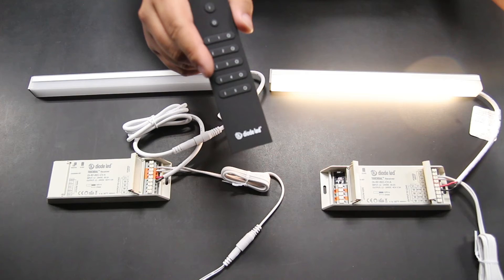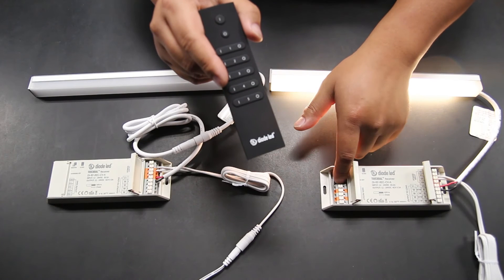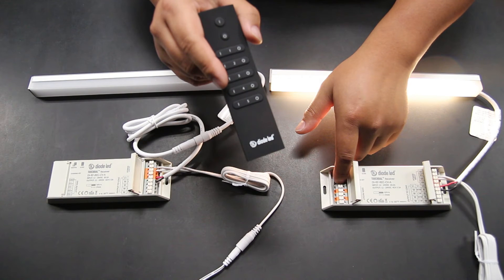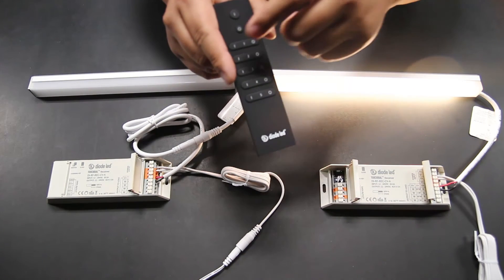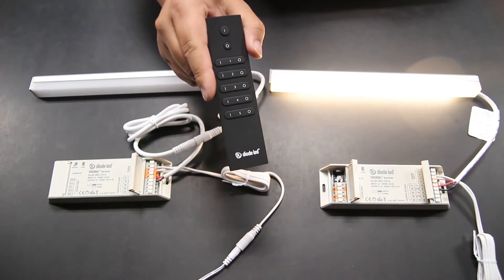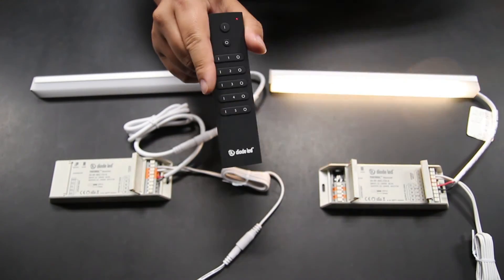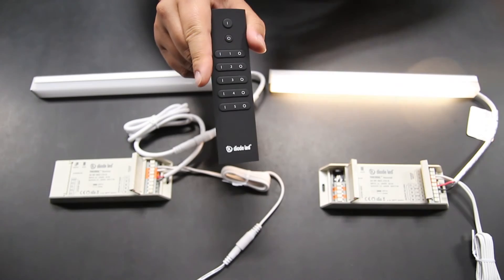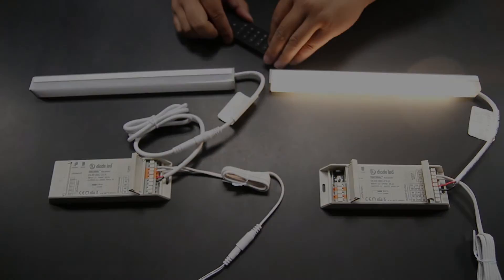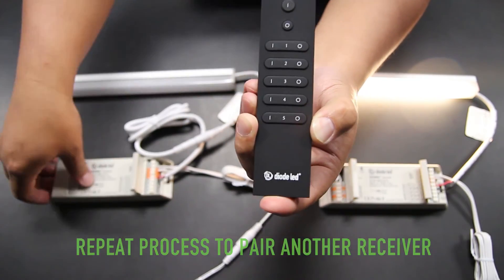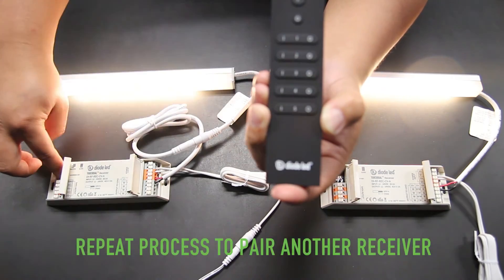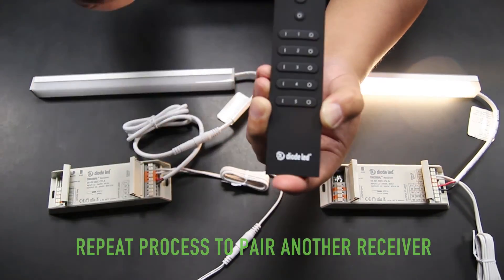To sync and pair a TouchDial receiver to a specific zone, press and release the learning key of a receiver followed by a press from the appropriate zone found on the remote control. The lights on the receiver should flash briefly when done correctly. Remember, if you have an additional TouchDial receiver and want to add it to the same zone, simply repeat the process.